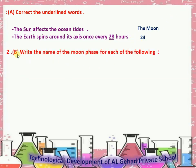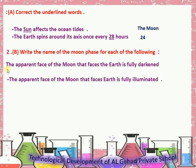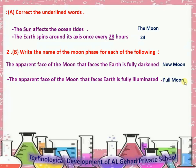Write the name of the moon phase for each of the following. Number 1: The apparent face of the moon that faces the earth is fully darkened. Answer: New moon. Number 2: The apparent face of the moon that faces the earth is fully illuminated. Answer: Full moon.